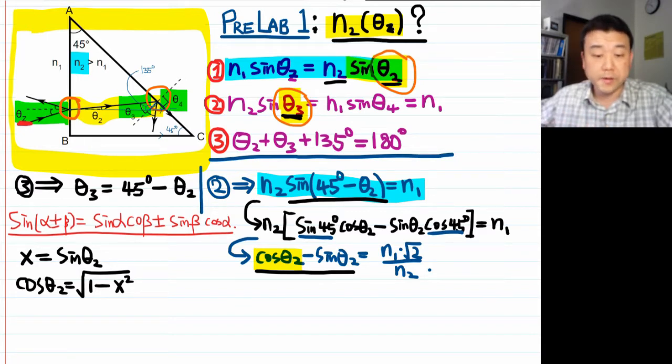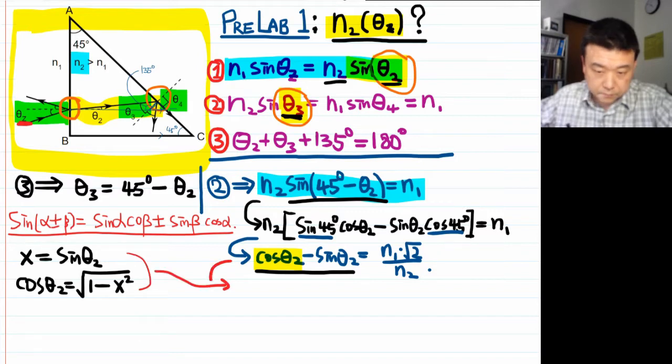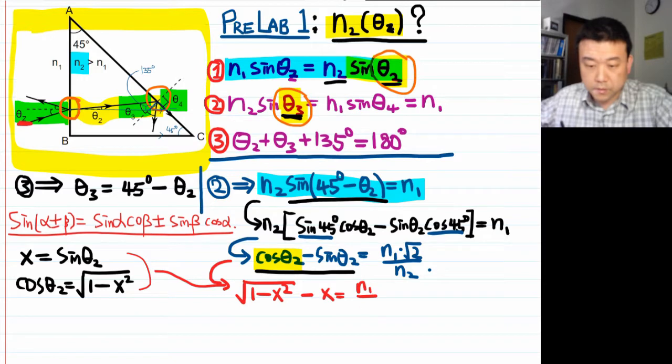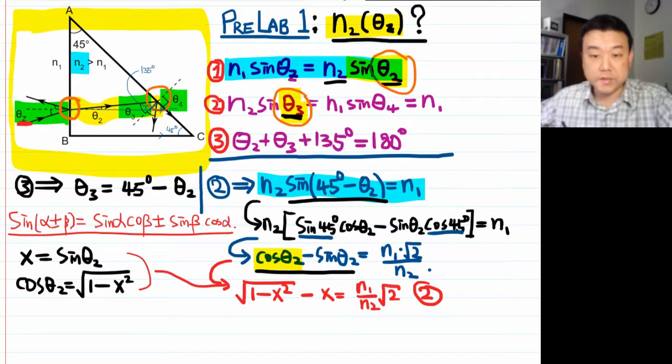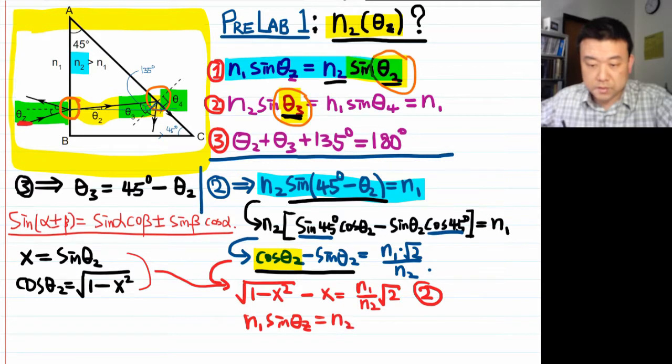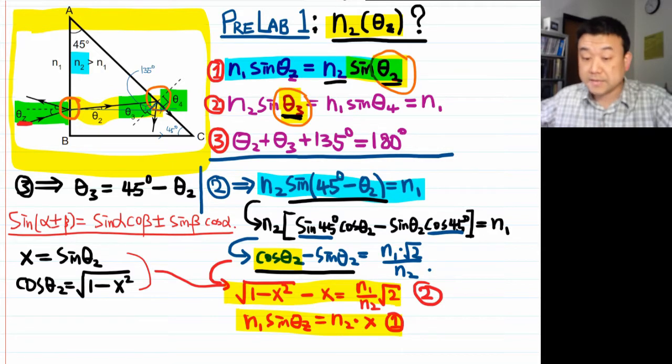So now you see that it's going to be a little bit complicated algebraically. We are going to have to use quadratic formula. So plugging these in, you get square root of 1 minus x squared minus x is equal to n1 over n2 times square root of 2. So this is my newest version of equation 2. And let me write down the newest version of equation 1. So you have these two equations, two unknowns, x and n2.